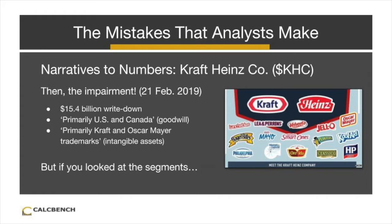Then, suddenly, earlier in February, we had this gigantic goodwill impairment — an overall impairment of $15.4 billion, split between a goodwill write-down and an intangible assets write-down, which you do not see too often. The company specifically cited slowdowns in the U.S. and Canada businesses for the write-down of goodwill, and also wrote down the intangibles because of the Kraft and Oscar Mayer trademarks, apparently because we are all eating healthier foods and don't like processed foods. My question was: this write-down dropped on everybody's lap in February of 2019 — is there some way somebody looking at those operating segments before the trouble signs, before the impairment happened, could have seen the trouble signs and perhaps anticipated this goodwill write-down issue? Pranav, walk us through the rest of the story here.